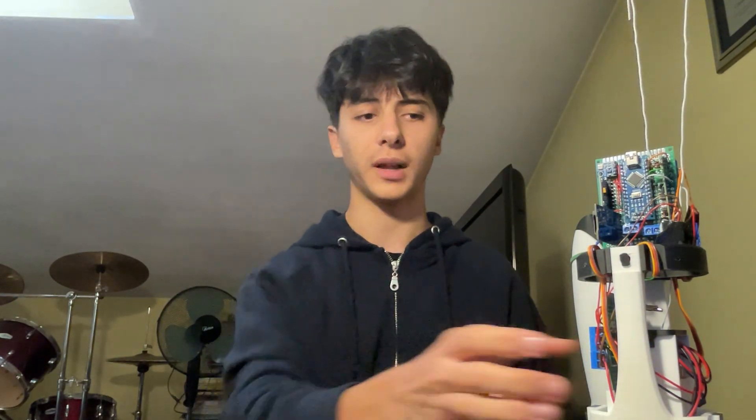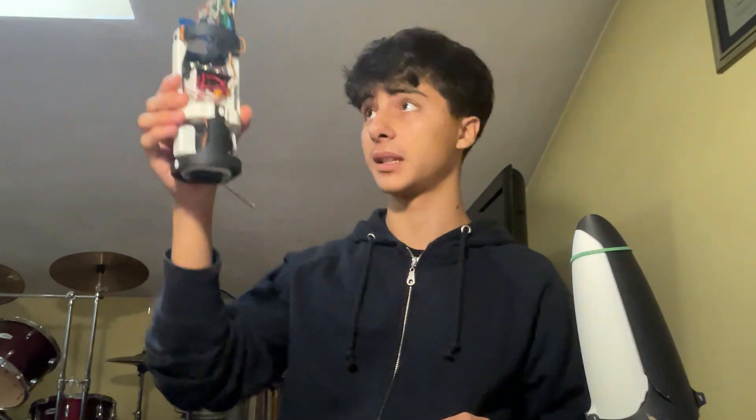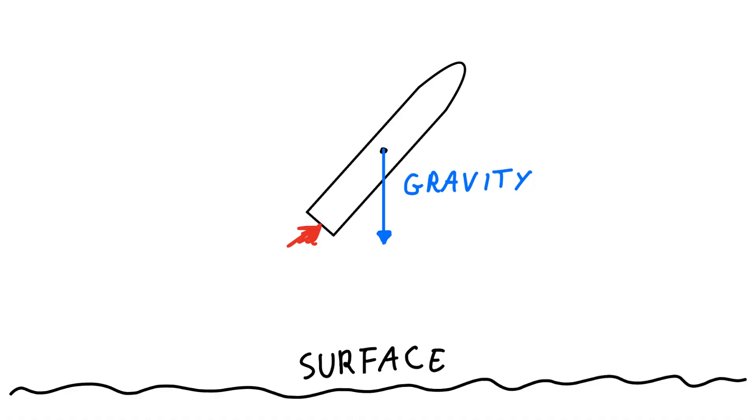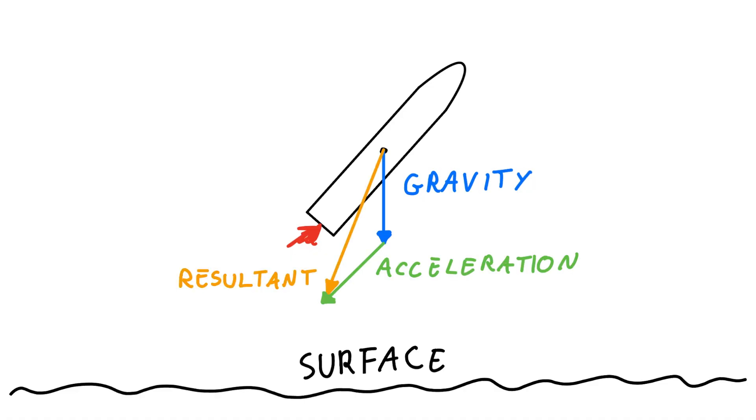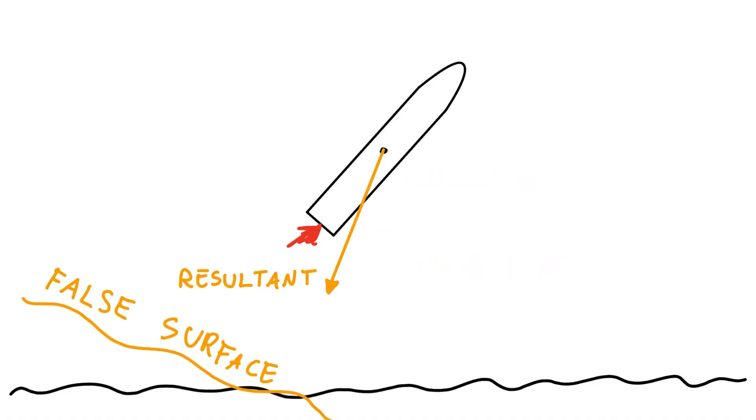I chose not to use the gravity vector coming from the accelerometer, because during flight we are actually accelerating upwards, adding another vector to the gravity vector. So we wouldn't have any meaningful data about where the Earth's surface is. The best way would be to use a Kalman filter and I will surely do it in the future.